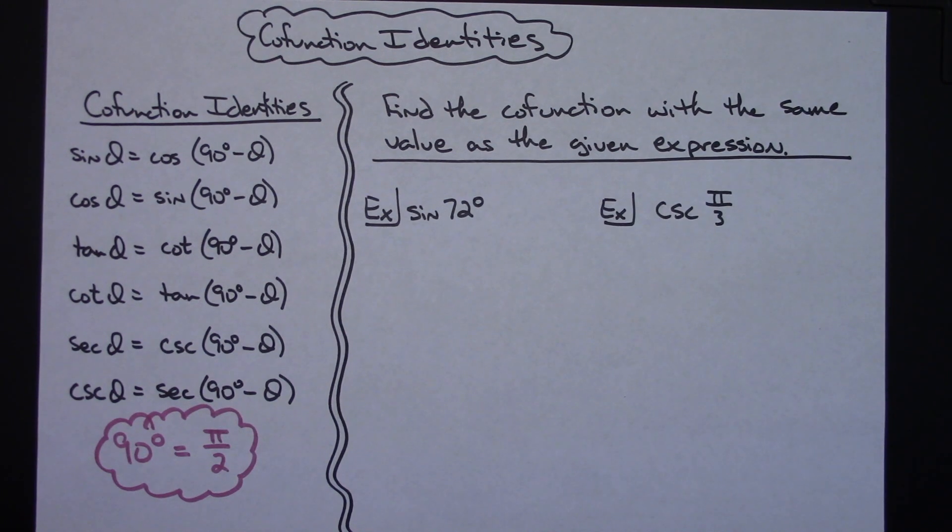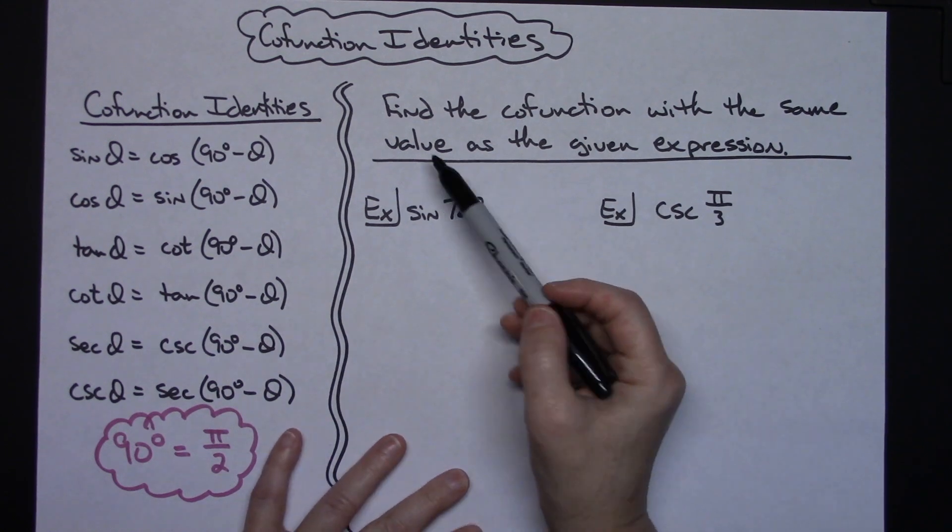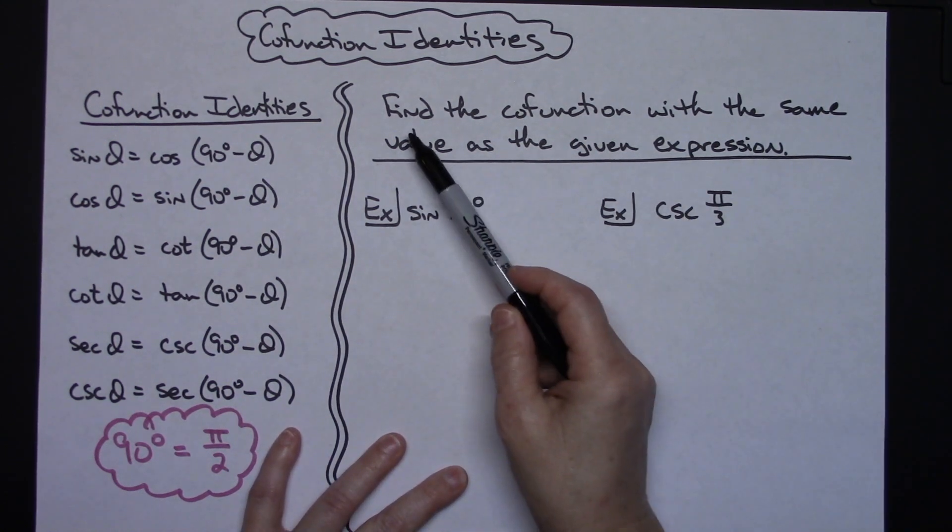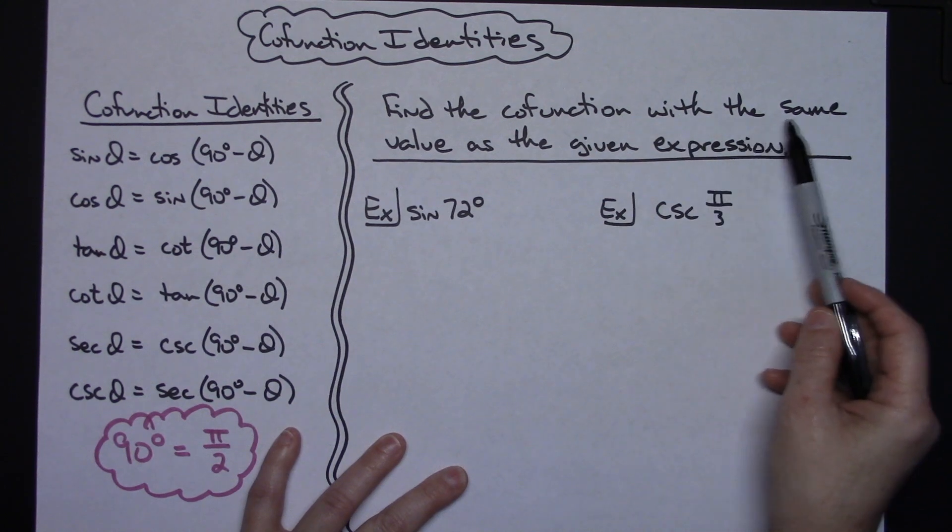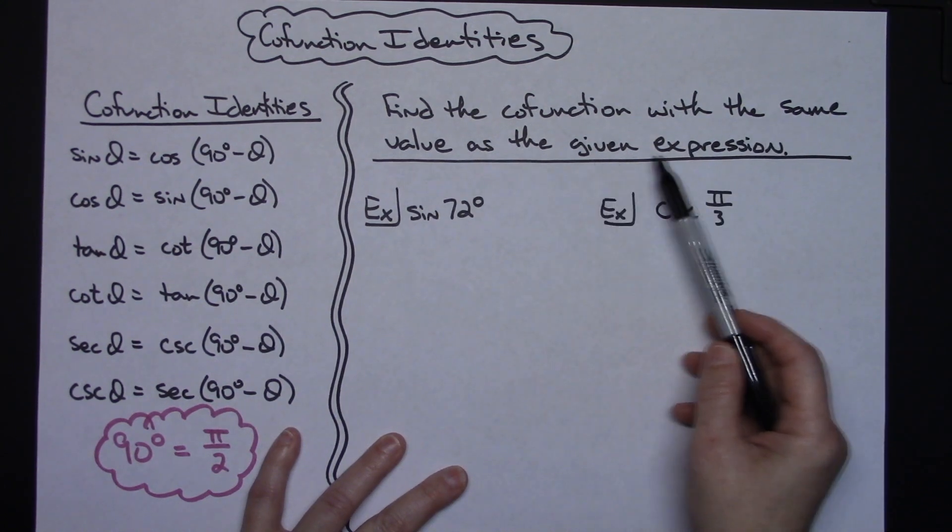At the very beginning of a trig course you are introduced to these cofunction identities and it's just a basic way to get you used to finding an angle that when I take the sine and cosine of it I get the same value. So you would typically see questions that look like this: Find the cofunction with the same value as the given expression.